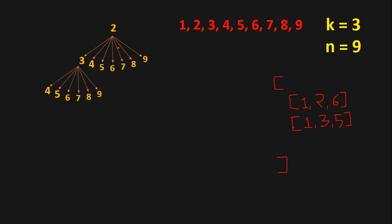If we choose 2 as the first number instead, we have choices: 2,3 — 2,4 — up to 2,9. For the triple 2,3,4: 2+3+4=9, so let's add this combination to our answer list. Then 2,3,5 and beyond all sum to more than 9.